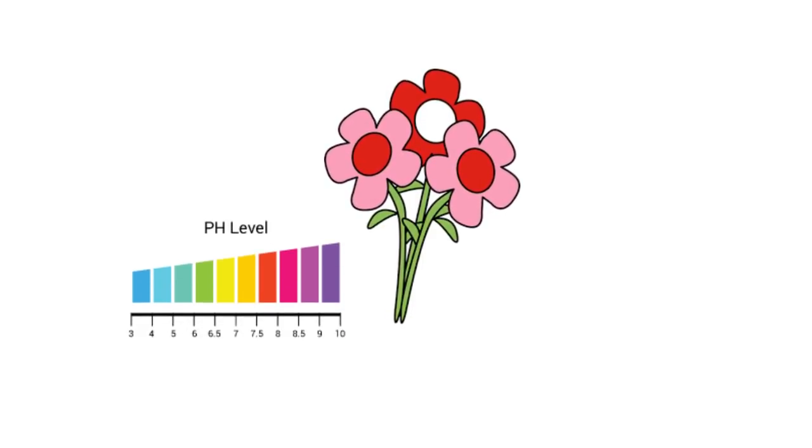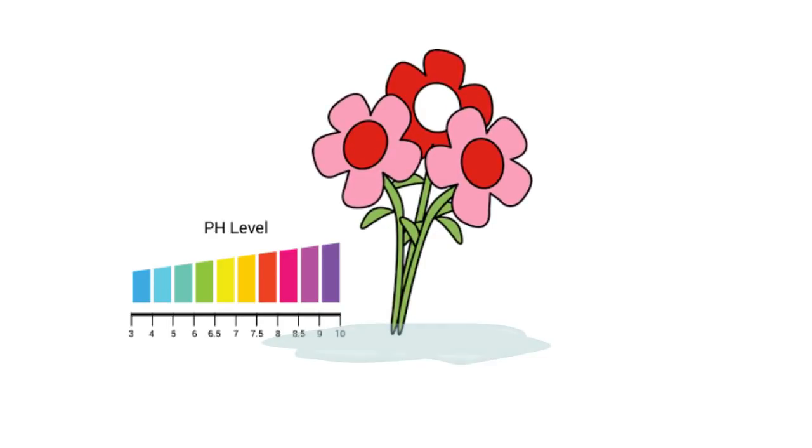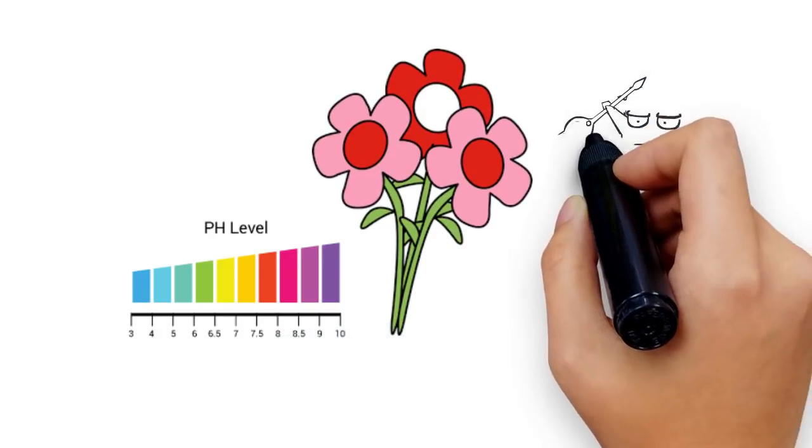4. Extend the life of cut flowers. While white vinegar is a great weed killer, it can also extend the life of cut flowers, as it lowers the pH of the water. The lower pH helps the flower absorb more water and creates a hostile environment for microbes.